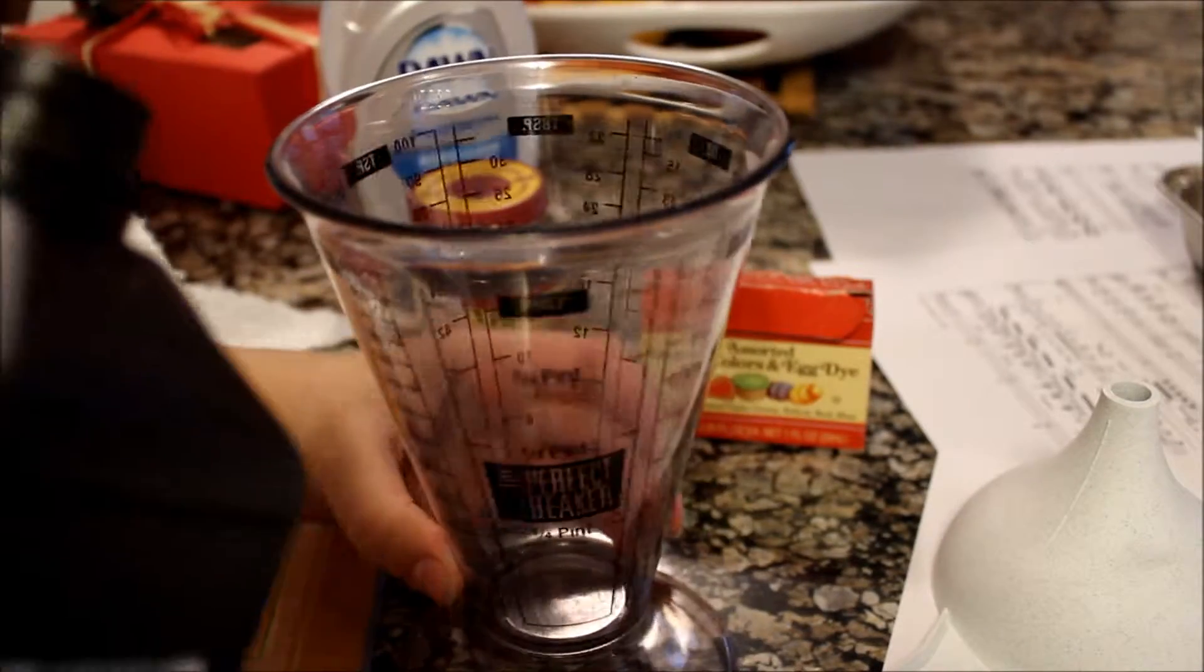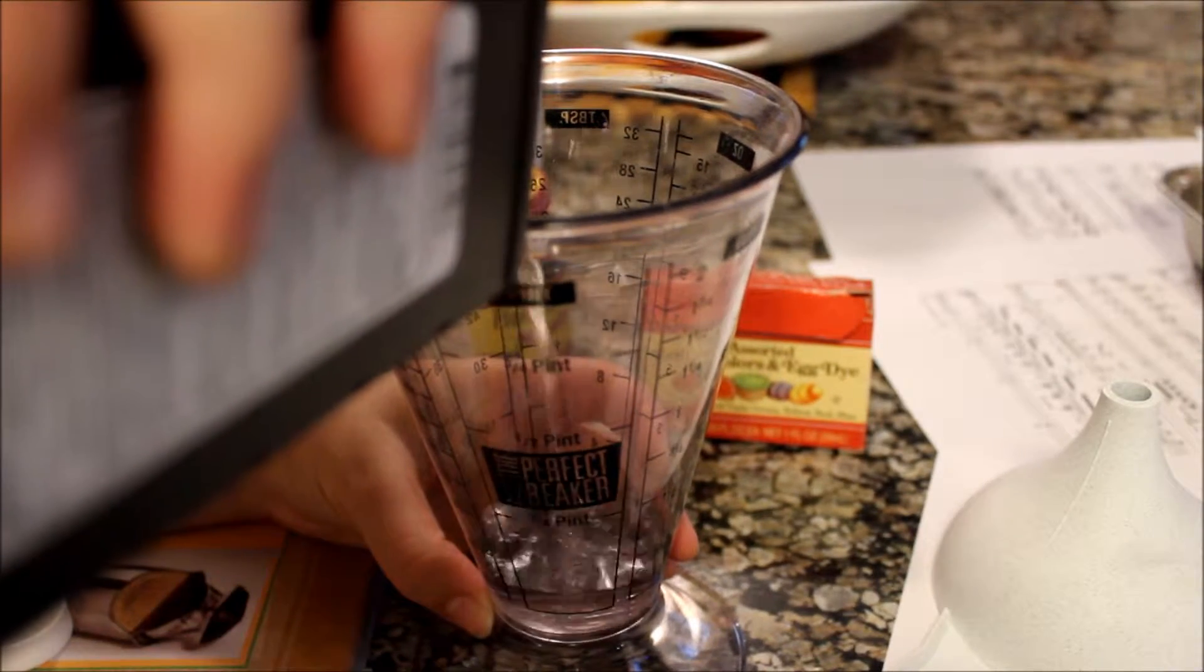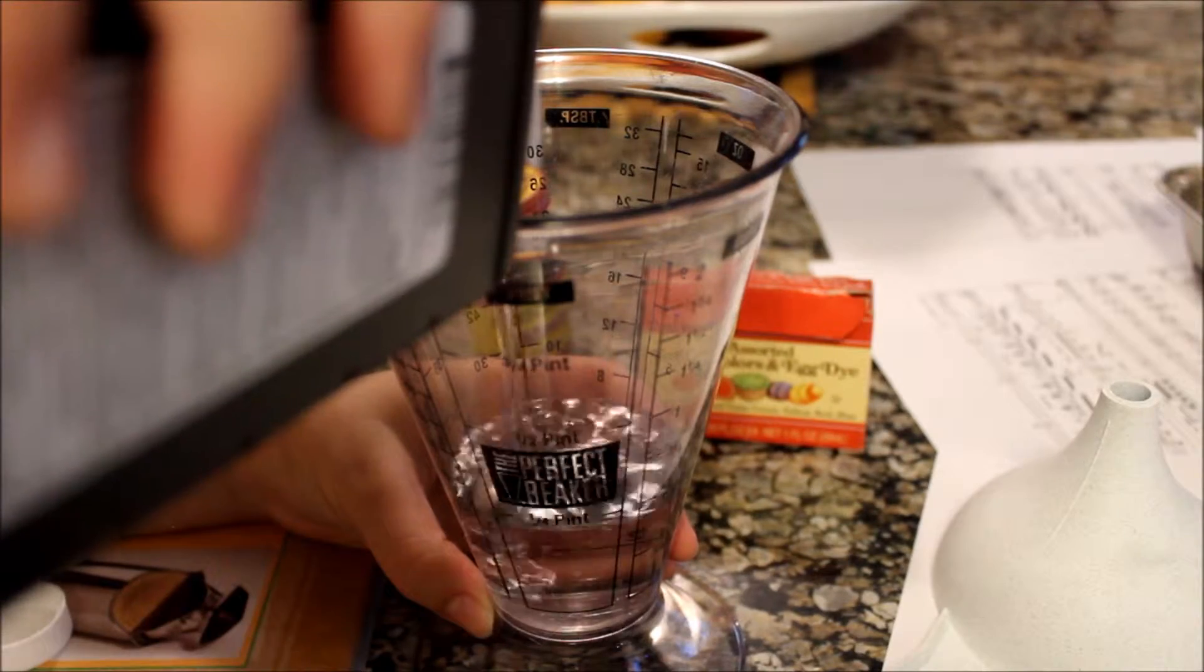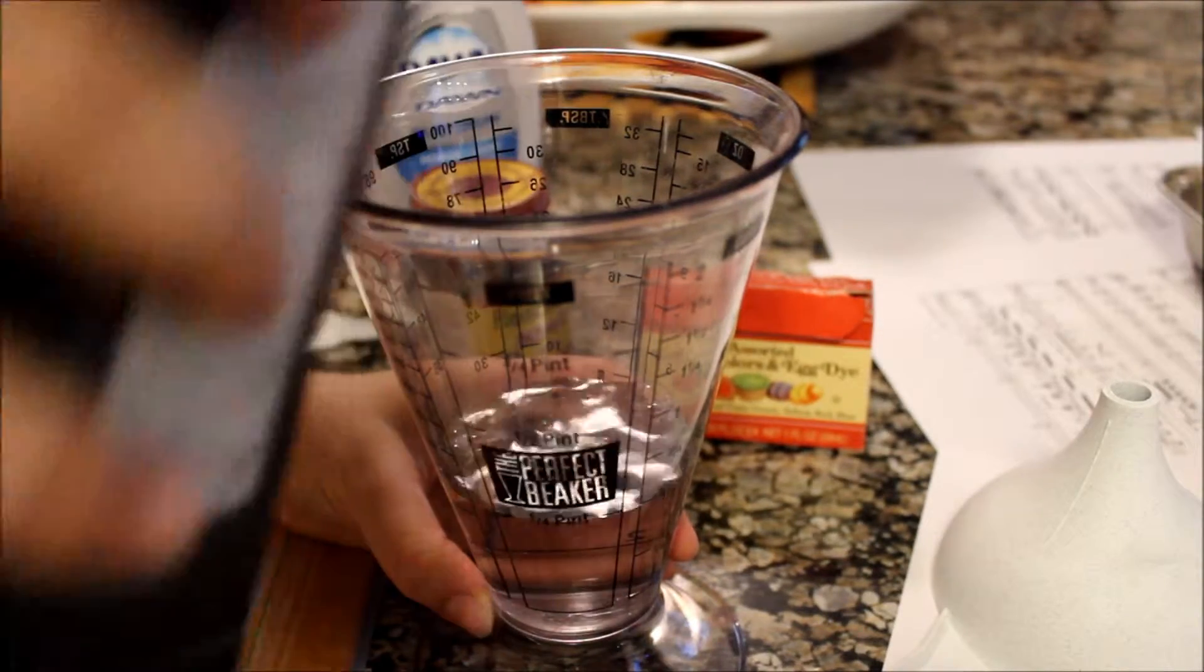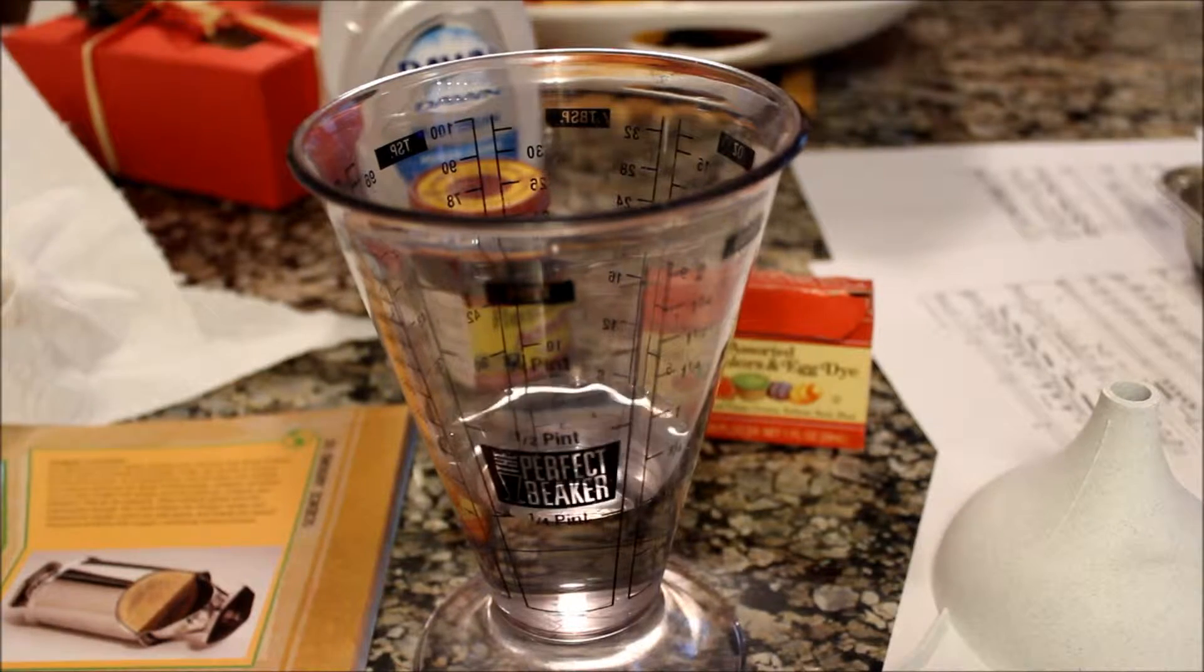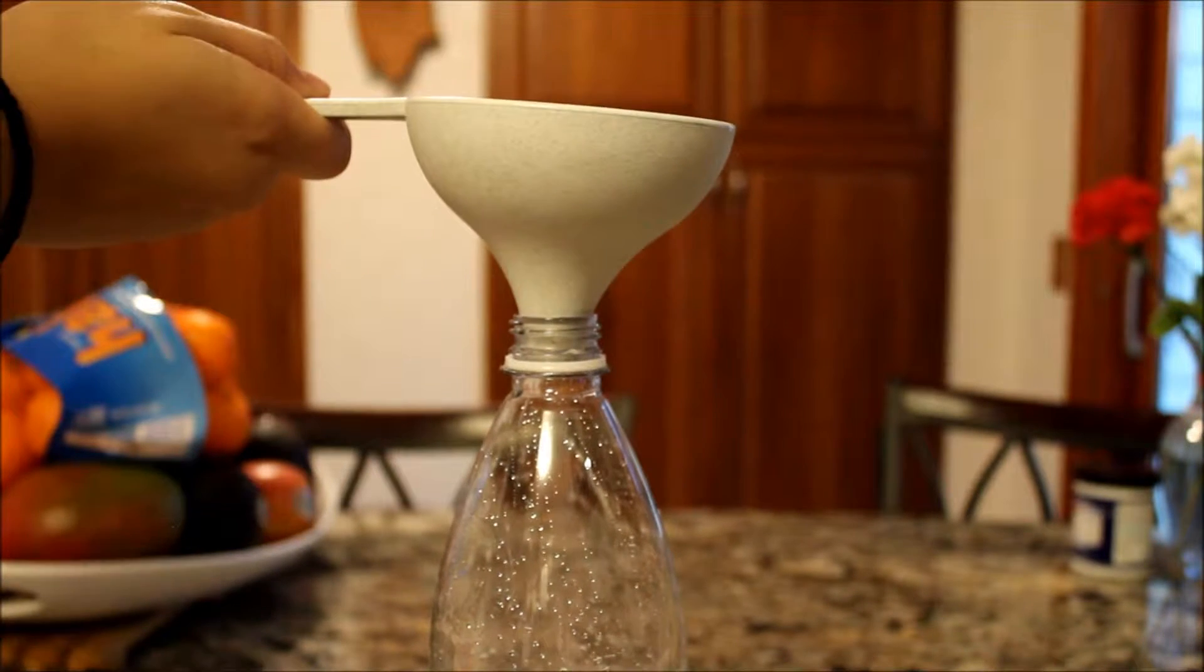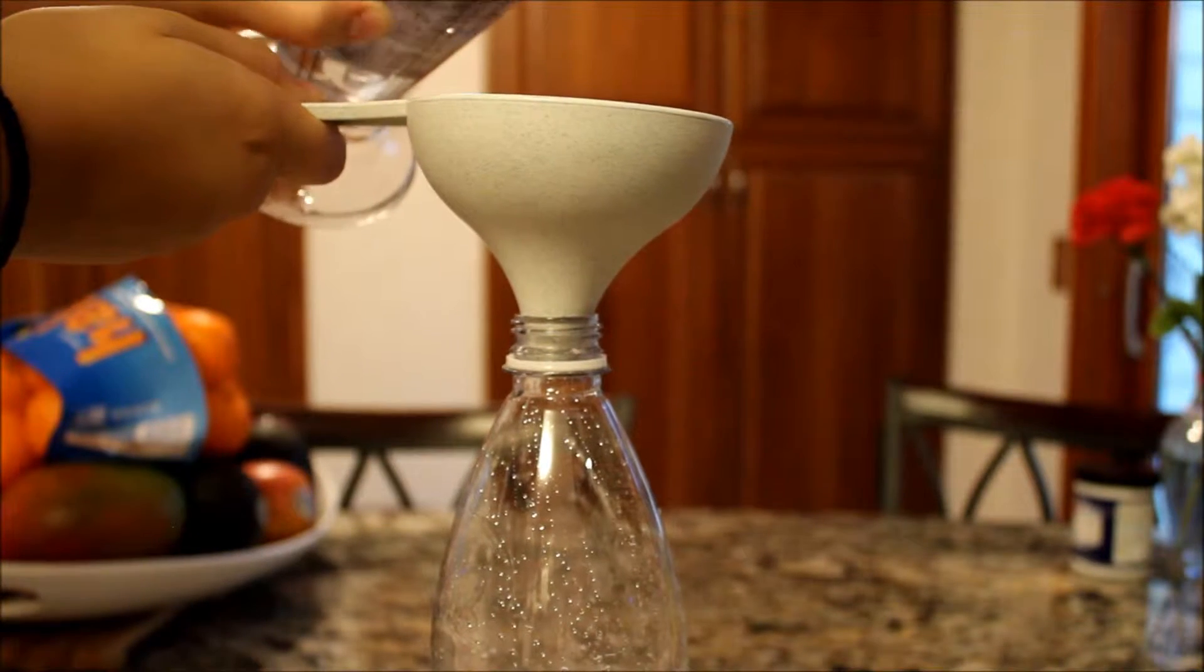If you don't have a beaker, just use some sort of a measuring cup. I found this thing was really fun to do. I think we did it 2 times, and if I'm ever babysitting, I'll probably do it with a little kid. It's so much fun, and it's pretty safe. Just be careful with the hydrogen peroxide.